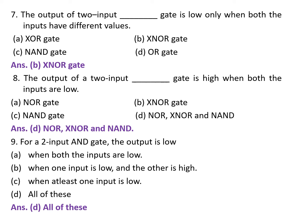Next question: the output of which 2-input gate is high when both the inputs are low? A. NOR gate. B. XNOR gate. C. NAND gate. D. NOR, XNOR, and NAND gates. The correct answer is D — NOR, XNOR, and NAND gates.